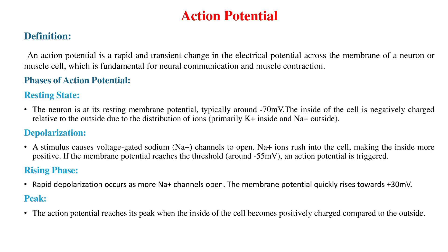Phases of Action Potential. Resting State: The neuron is at its resting membrane potential, typically around –70mV. The inside of the cell is negatively charged relative to the outside due to the distribution of ions.